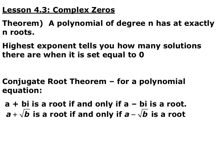We have a conjugate root theorem which says for any a plus bi — a complex number — that's a root if and only if its complex conjugate a minus bi is also a root. Same with square roots: if a plus root b is a root, then a minus root b must also be a root. That's why in the quadratic formula you have that plus or minus option.